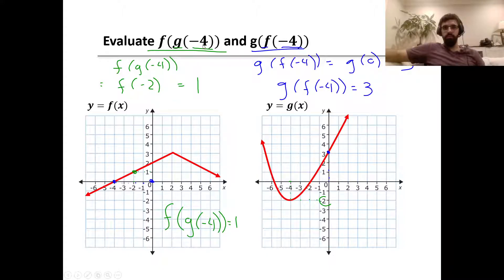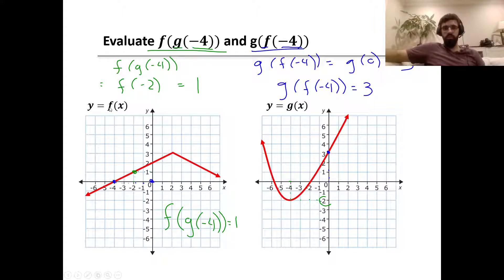Starting from the inside and working our way out, we put negative 4 into function g. On graph g, negative 4 has an output of negative 2. So g of negative 4 is negative 2. We then use negative 2 as our input for f. On graph f, negative 2 has an output of positive 1. So f of g of negative 4 equals f of negative 2, which equals 1.